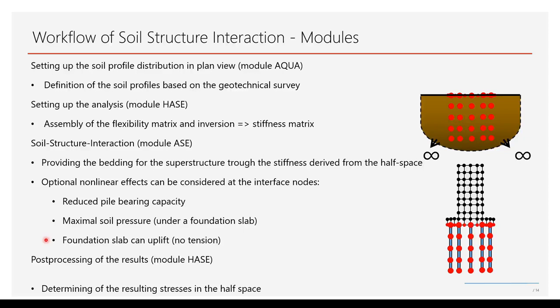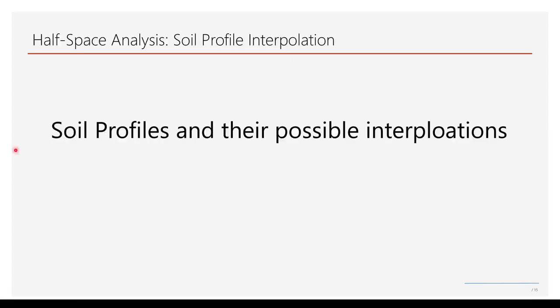This brings us to the end of the first chapter. In the next chapter, I will talk about soil profiles and their possible interpolations — how to define and set up soil profiles, how they can be introduced to your model, and what interpolations are available to create the layered half-space in your project. Since the vertical σ_z stress can be assessed at any depth of the half-space, the procedure can interpret and utilize a layered half-space with soil parameters and layer thickness varying in vertical as well as radial direction based upon real bore profile data.